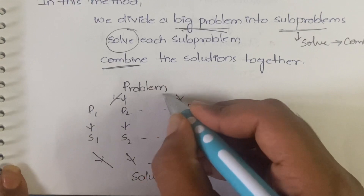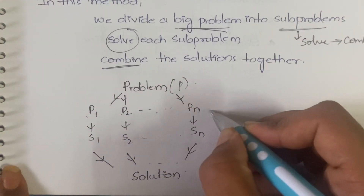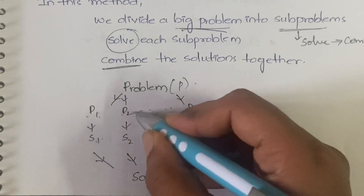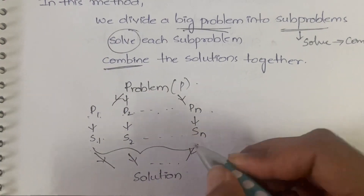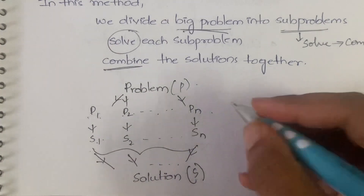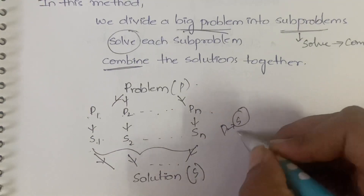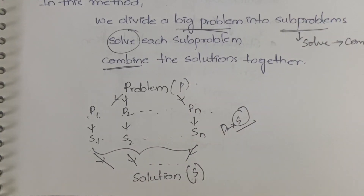Here is a picture to make it more clear. You are dividing a bigger problem P into P1, P2, and so on up to Pn. Then you are finding a solution for each — for P1 you get S1, for P2 you get S2, and so on. You combine all these to get the final solution S. You did not get S directly; first you divided P, solved each subpart, then combined the solutions.